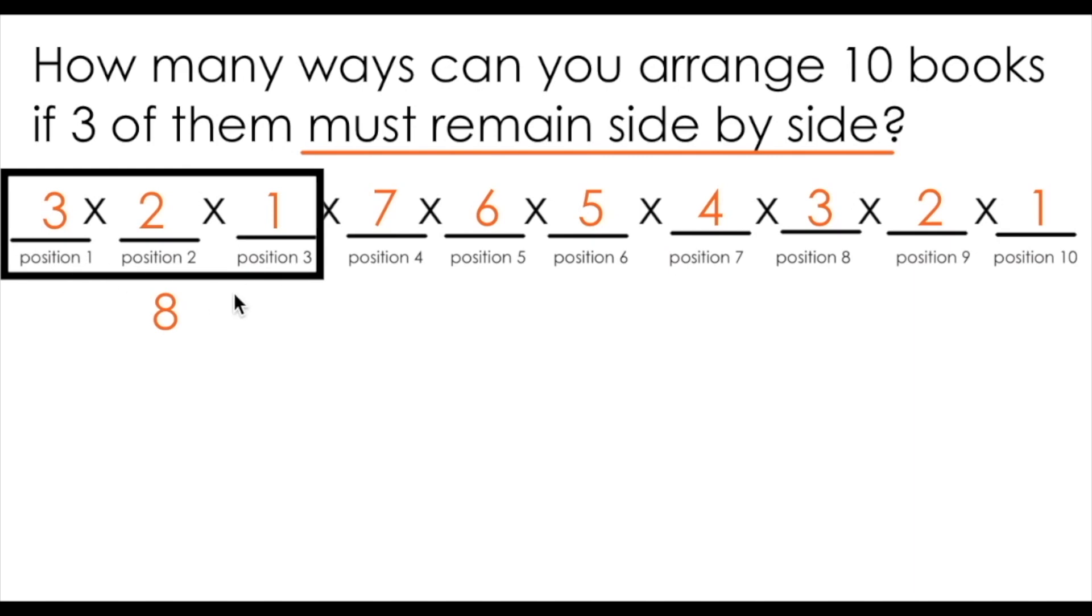So we can say that I have three factorial possible ways of arranging the three books that must remain side by side. We reflect that in the answer to this problem by multiplying our original eight factorial by the three factorial possible ways of arranging the three books.